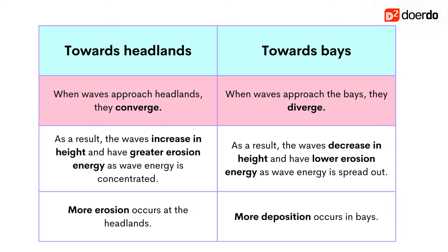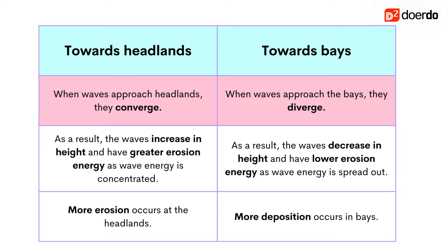We should remember that waves converge on headlands and diverge on the bays. Hence, wave refraction has an uneven impact on the shoreline. The waves at the headlands are higher, they have greater erosion energy and hence more erosion. Whereas when the waves approach the bays, they are shorter, have lower erosion energy, and hence less erosion and more deposition.